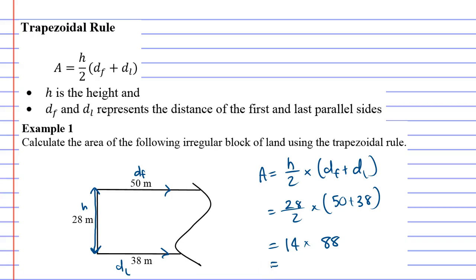14 times 88 is 1232 square meters. Nice big block of land.